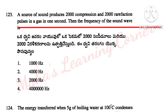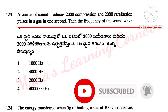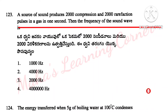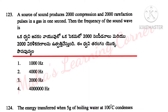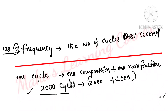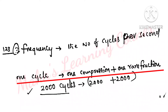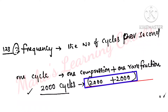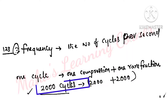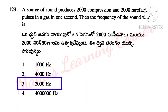A source of sound produces 2000 compressions and 2000 rarefaction pulses in a gas in one second. Then the frequency of the sound wave is? Frequency is equal to the number of cycles per second. One cycle equals one compression plus one rarefaction. 2000 compressions plus 2000 rarefactions equals 2000 cycles, which equals 2000 hertz. So Option 3 is the correct answer.